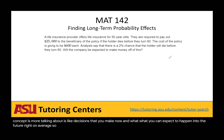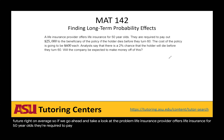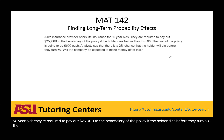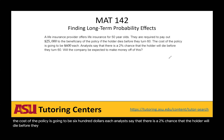So if we go ahead and take a look at the problem: a life insurance provider offers life insurance for 50-year-olds. They're required to pay out $25,000 to the beneficiary of the policy if the holder dies before they turn 60. The cost of the policy is $600 each. Analysts say there is a 2% chance that the holder will die before they turn 60. Will the company be expected to make money off of this?